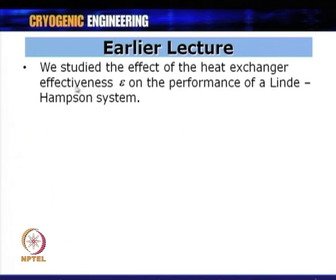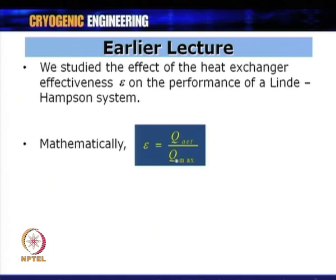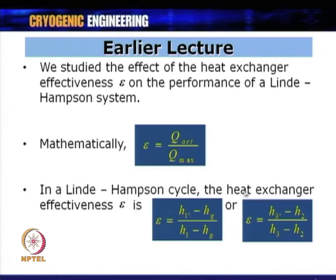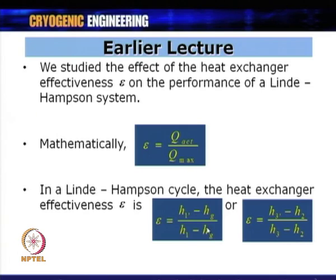Before this we had studied the ideal thermodynamic cycle and then the Linde-Hampson system, in which we studied the effect of heat exchanger effectiveness. Mathematically, the heat exchanger effectiveness epsilon is actual heat transfer divided by maximum possible heat transfer, so epsilon is between 0 and 1. In the Linde-Hampson cycle, epsilon equals (h1' − hG) / (h1 − hG), where h1' − hG is the actual heat transfer and h1 − hG is the maximum possible heat transfer when effectiveness is 100 percent.